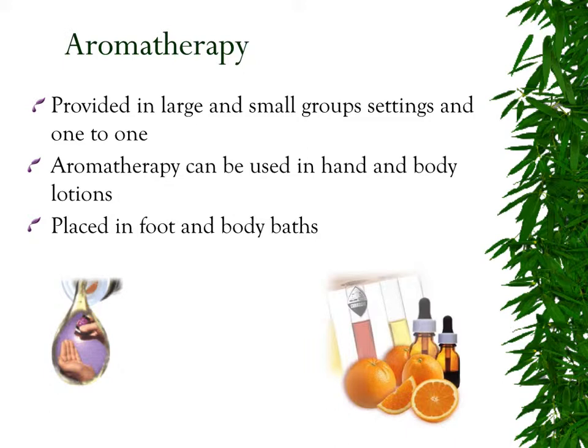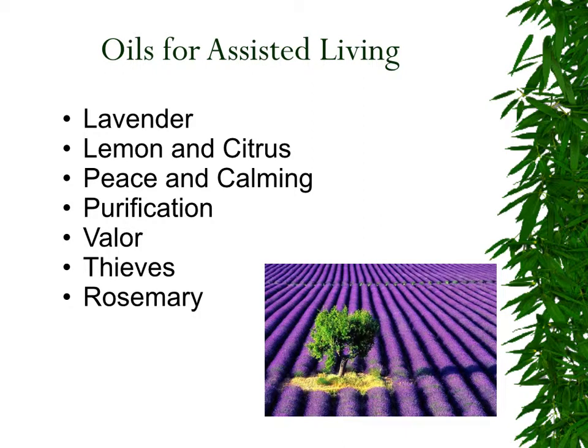Aromatherapy can be used in hand and body lotion and also placed in foot and body baths. The following oils are typical for assisted living: lavender, lemon and citrus, peace and calming (which is a blend), purification (a blend), valor, and thieves (both blends), and rosemary. Let's go through each and explore how they affect our body.